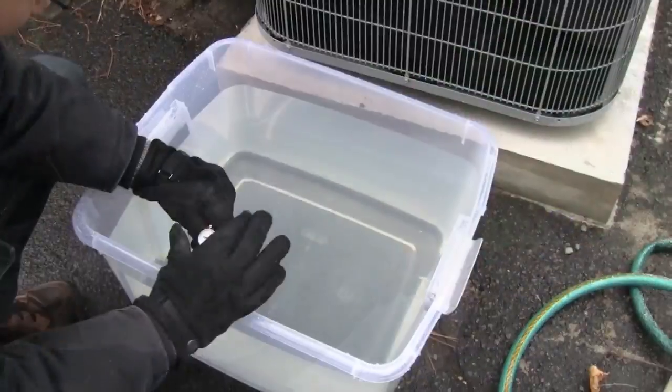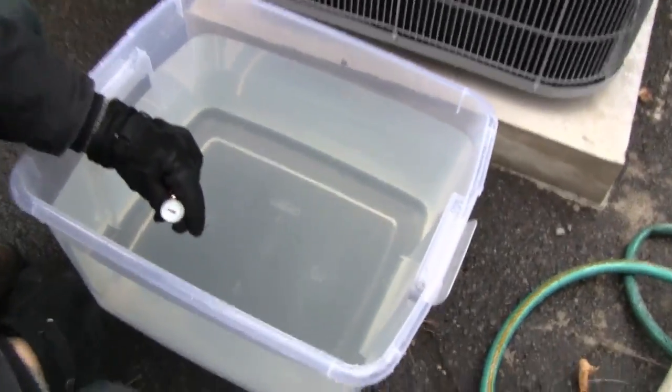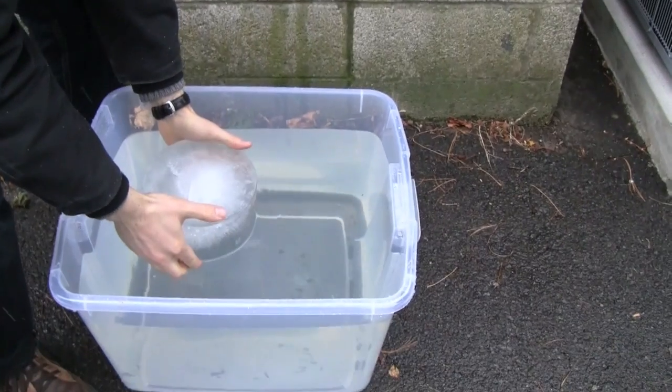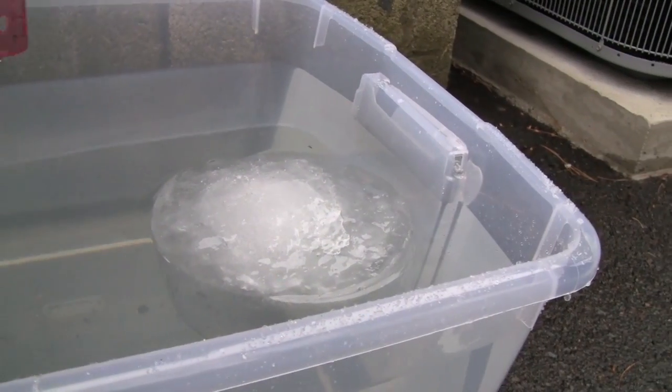Take the temperature of the water to get a more accurate figure for its density. Place the ice block in the water and measure the distance between the top of the block and the surface of the water.